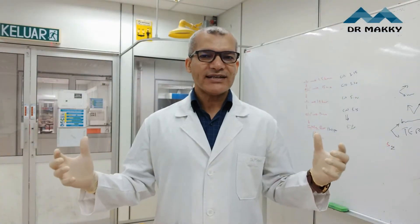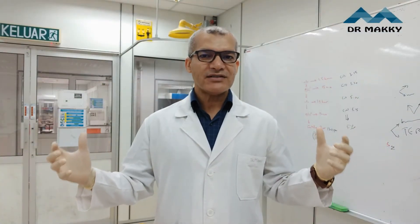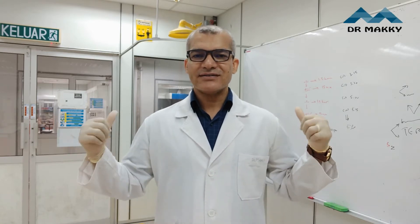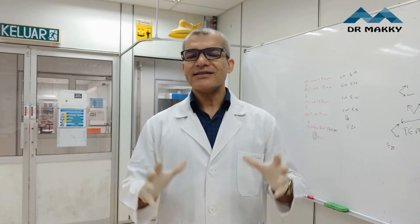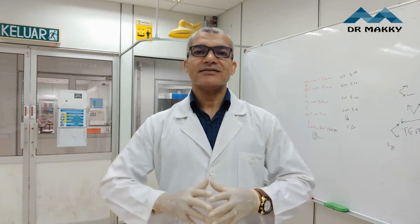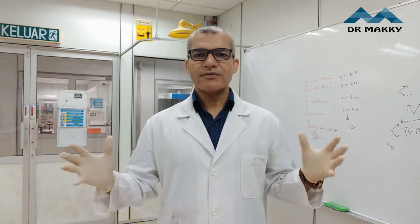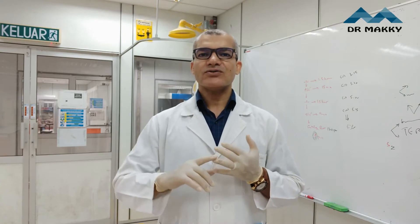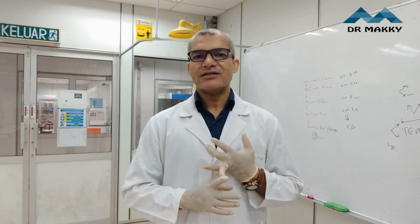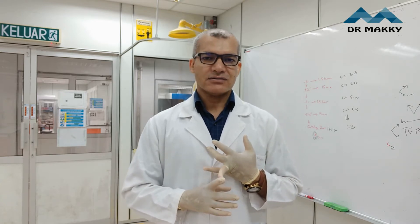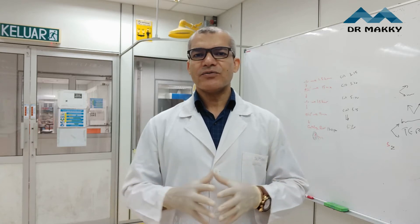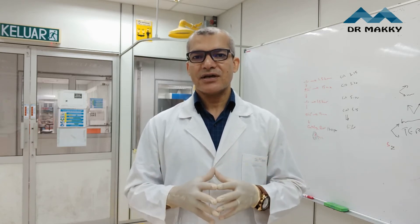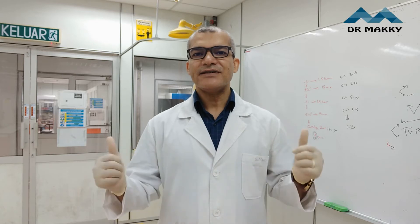This stain is called negative because the bacterial cells can't stain, but the background of the bacterial cells stains, which makes the bacterial cells transparent. The purpose of this stain is to examine the shape of the bacteria and also the arrangement of the bacterial cells. So under the microscope you can examine the bacteria and see the bacteria transparent and the field is dark.